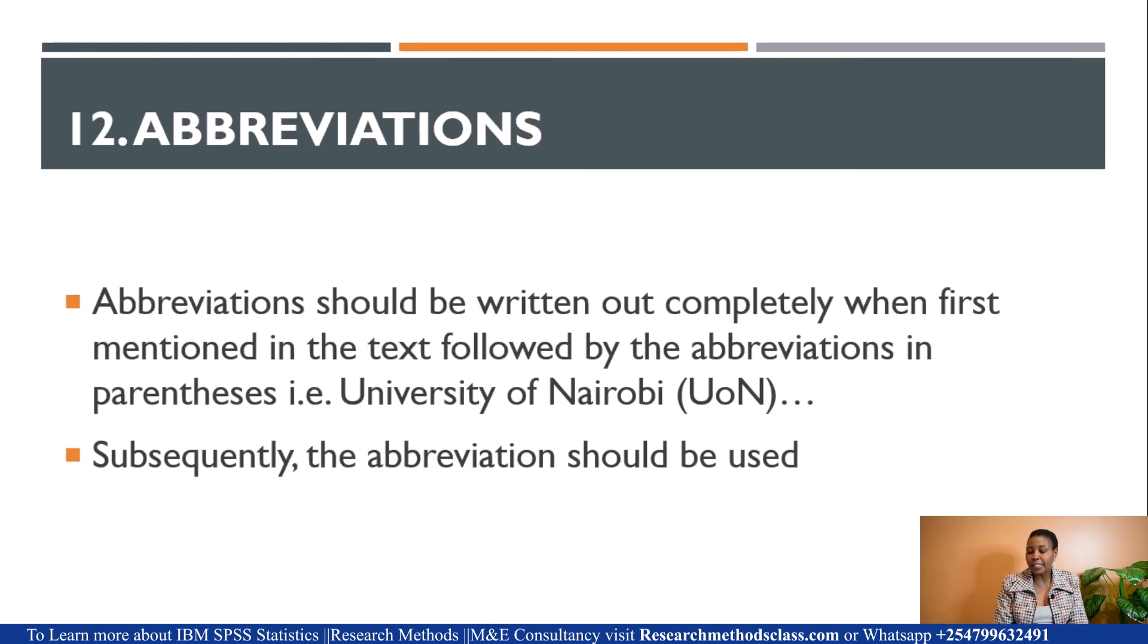Abbreviations should be written out completely when first mentioned in the text, followed by the abbreviations in parentheses. For instance, if you want to abbreviate University of Nairobi, the first mention should have the full name, then you put brackets, the round ones, and show the abbreviation. Subsequently, you can use the abbreviation.